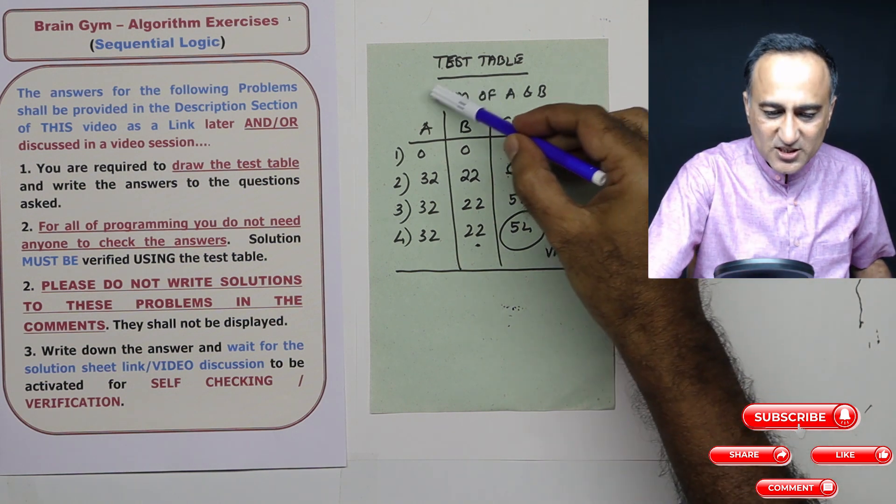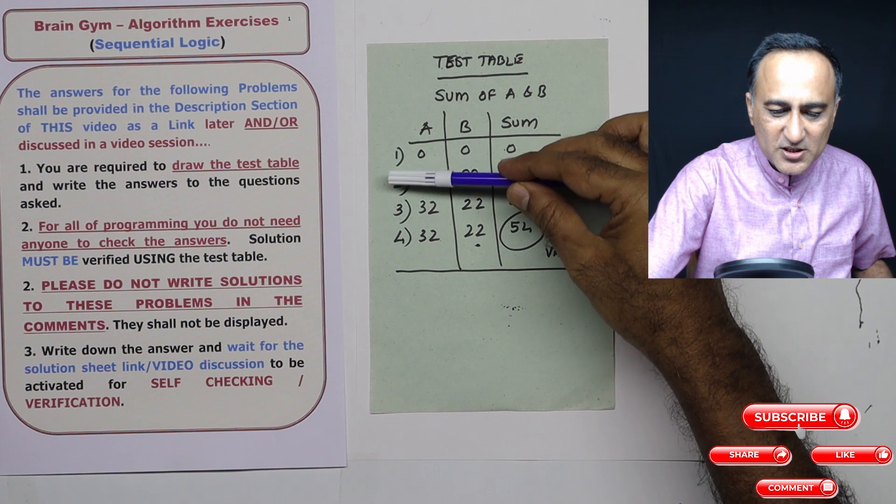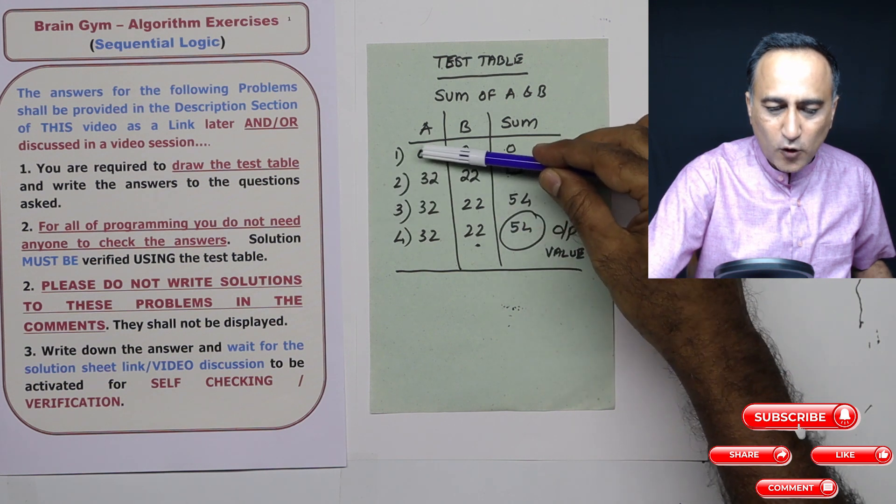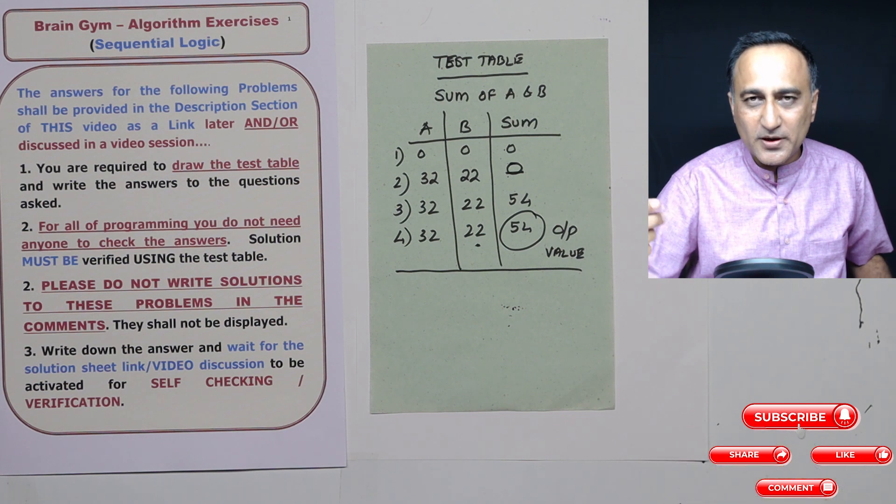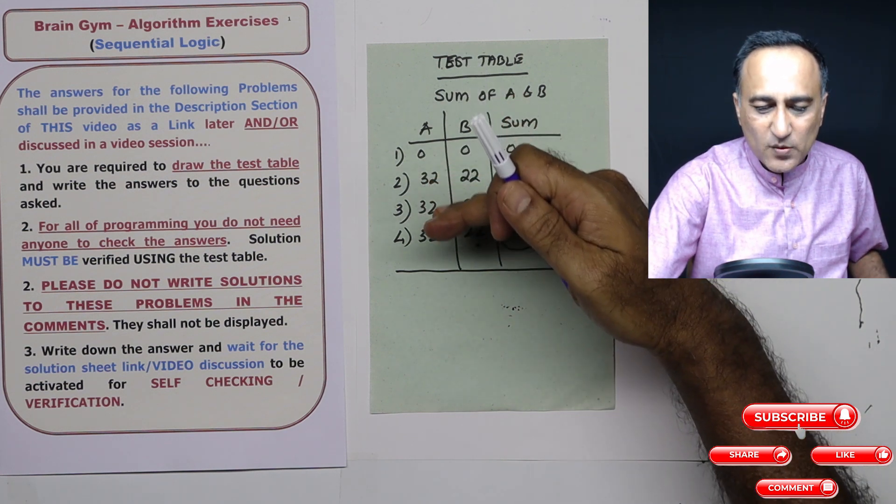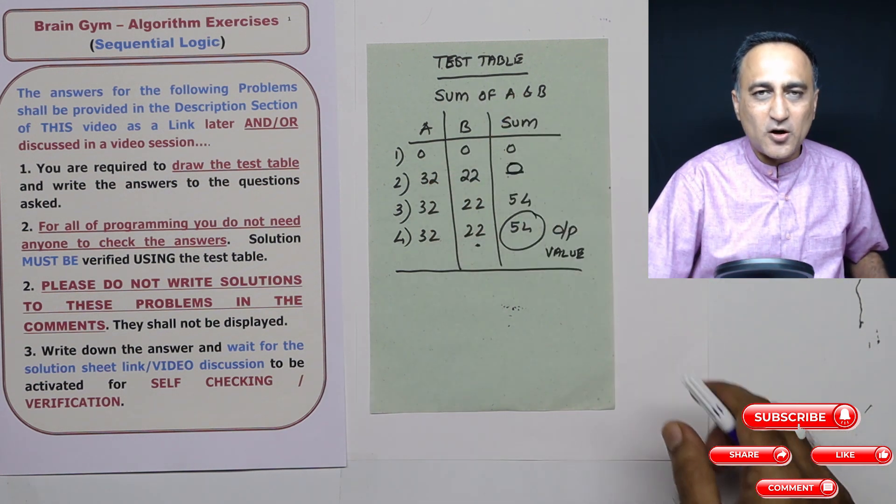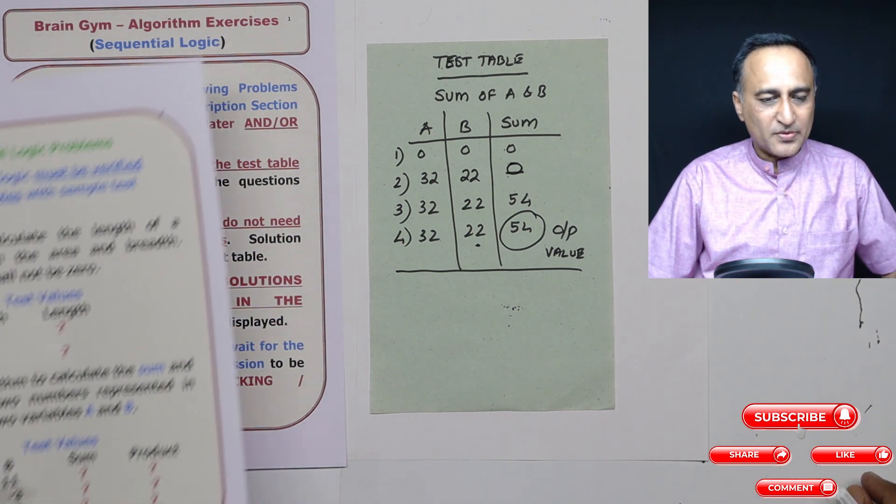So this construction of a test table, where every step of the algorithm and all the variables which are responsible for getting the result should be listed and their value should be changed and seen what is the outcome of that algorithm.